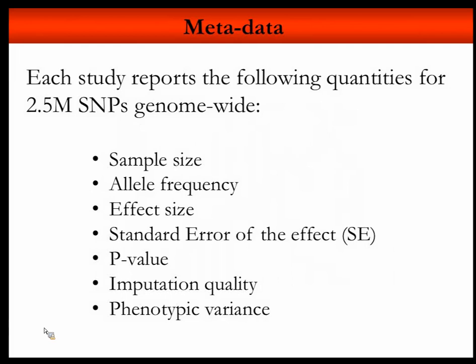In summary, GWAS studies are typically conducted in hundreds of thousands of individuals and discover very tiny effects. The data type I'm going to talk about is this metadata. Each individual study provides us, for every polymorphism: effect size estimate, sample size, allele frequency, standard error of the effect size, p-value, quality of the SNP, and the phenotypic variance in each genotype group. These statistics have been largely ignored beyond looking at the p-value for a new discovery — I will talk about how you can recycle this data.